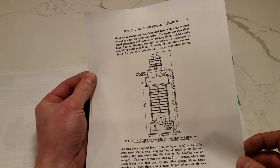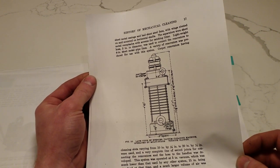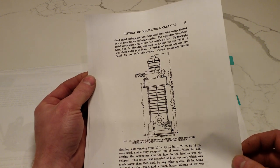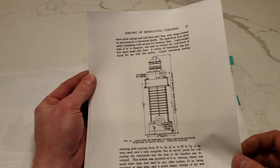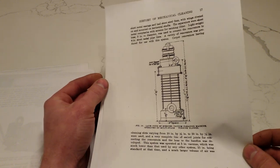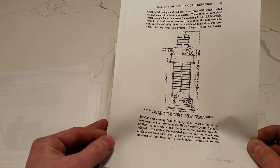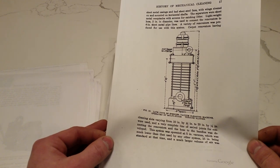Lightweight hose two inches in diameter was used to connect the renovators. Throughout this book, it calls the carpet nozzle, or the nozzle, a renovator, to four inch sheet metal pipelines. The system was operated at five inches of vacuum, which was much lower than that used by any other system. Fifteen inches being standard at that time.